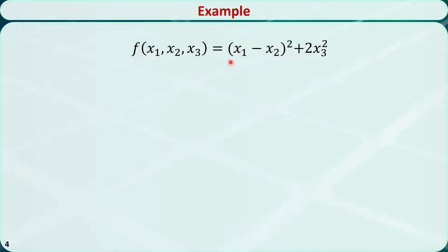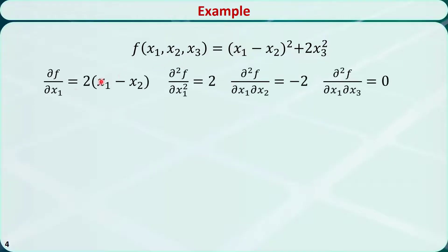Let's calculate the Hessian matrix of this example: (x1 minus x2) squared plus 2 times x3 squared. It has three variables: x1, x2, and x3. Let's first calculate the first-order partial derivative with respect to x1 — it's 2 times (x1 minus x2). Then we calculate the second-order partial derivatives with respect to x1 and x1, x1 and x2, and x1 and x3. They are 2, minus 2, and 0, respectively.